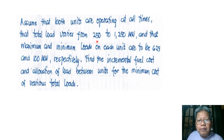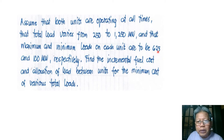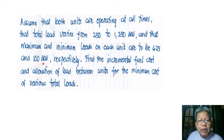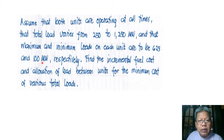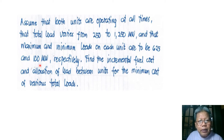Note that load varies from 250 to 1250 megawatts, and each unit can operate only up to a maximum of 625 MW and must operate at a minimum of 100 MW. Units cannot operate at very light loads like 10 or 20 MW because at very light load the vibrations of the generating units become very severe and are only acceptable when the unit is loaded up to at least 100 MW.